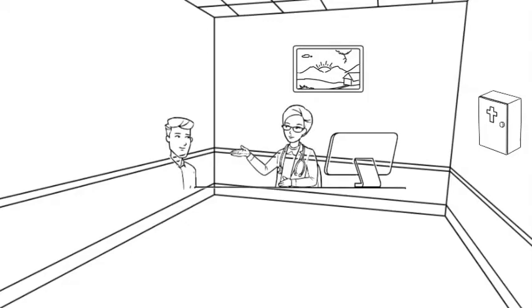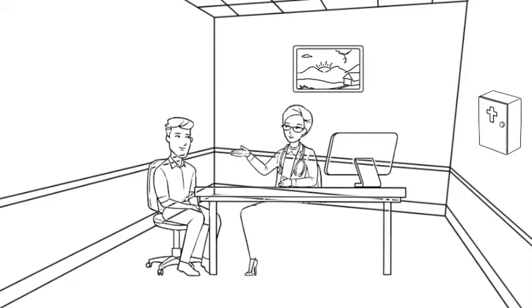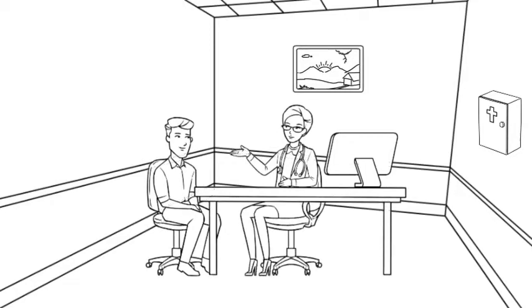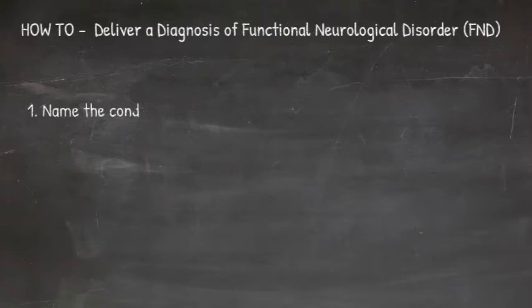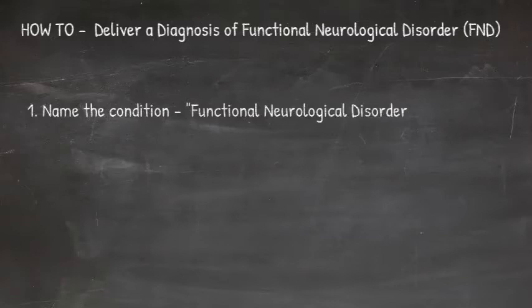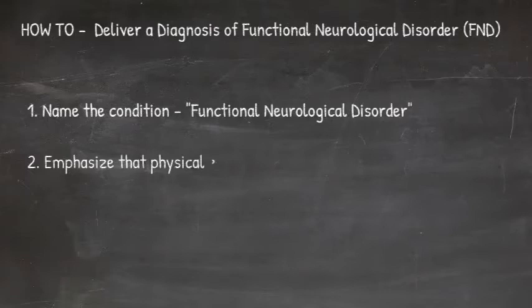Delivering the diagnosis of a functional neurological disorder is the first step in treatment. Core components of effectively delivering the diagnosis of FND include: name the condition with clarity — 'You have a functional neurological disorder' — and emphasize that physical examination signs are the basis for diagnosis.